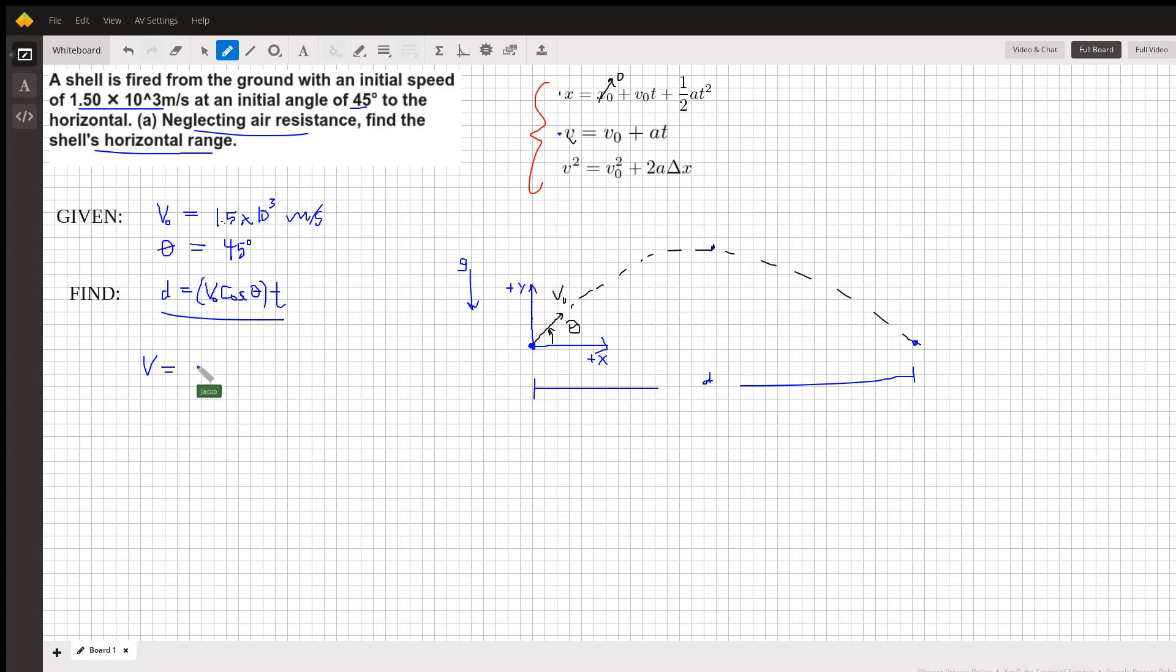So v y is equal to v naught y, which is the velocity component in the y direction, which is v naught sine theta, plus a t. Well, a is our acceleration, and our acceleration is pointing downwards, so that is negative g, gravity, times t, our time.